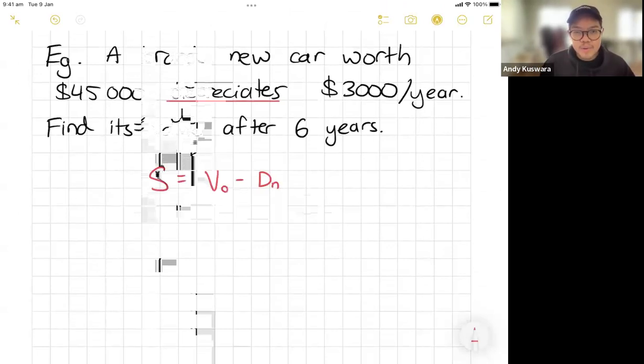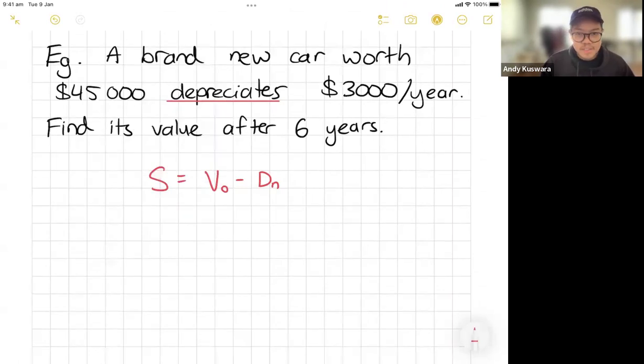Now, it says here, a brand new car worth $45,000 depreciates $3,000 per year. Find its value after six years. And again, you could have probably figured this out without a fancy formula. But this is the formula for it to work.